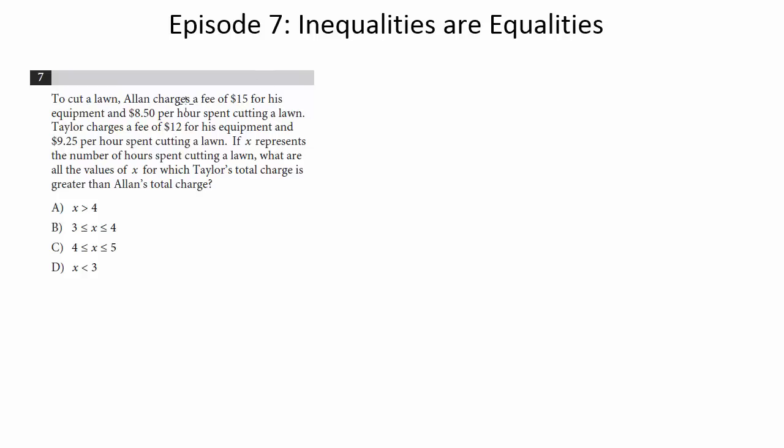To cut a lawn, Allen charges a fee of $15 for his equipment and $8.50 per hour spent cutting a lawn. Taylor charges a fee of $12 for equipment and $9.25 per hour spent cutting a lawn. If X represents the number of hours spent cutting a lawn, what are all the values of X for which Taylor's total charge is greater than Allen's total charge?